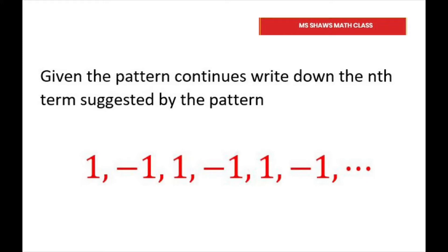So basically, when you see this positive, negative, positive, negative, positive, negative, this is called an alternating sequence.